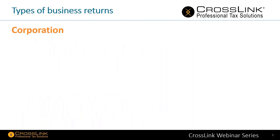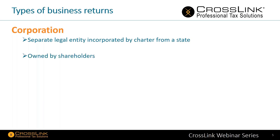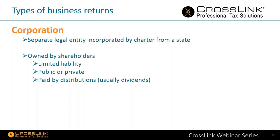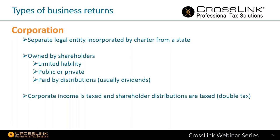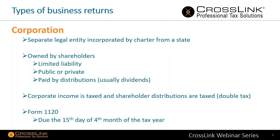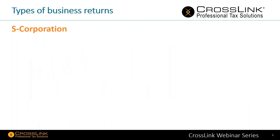A corporation is a separate legal entity incorporated by a charter from a specific state and owned by its shareholders. There's limited liability, it can be public or private, and it's paid by distributions — usually dividends. Corporate income is taxed and shareholder distributions are also taxed, creating a double tax. This is done on Form 1120, due the 15th day of the fourth month of the tax year.